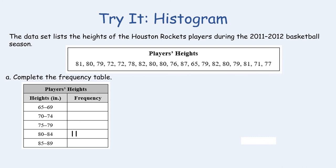79, 72, 72, 78, 82, 80, 80, 76, 87, 65, 79, 82, 80, 79, 81, 71, and 77. So I've used all of the numbers given to me and I've created my frequency table.